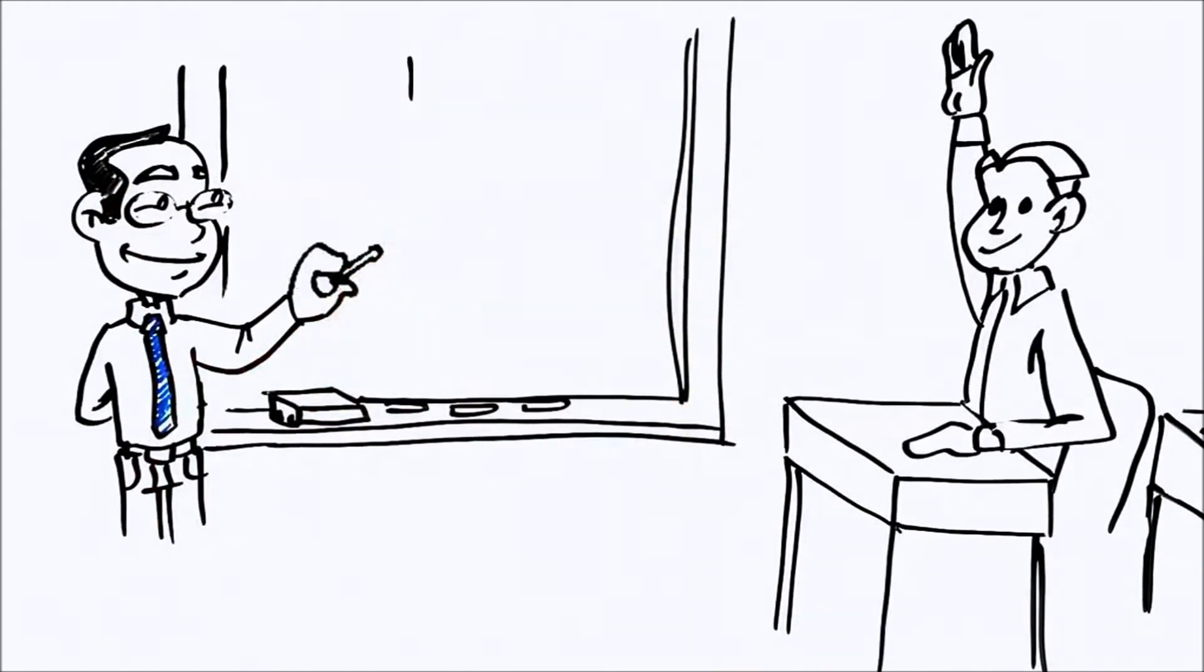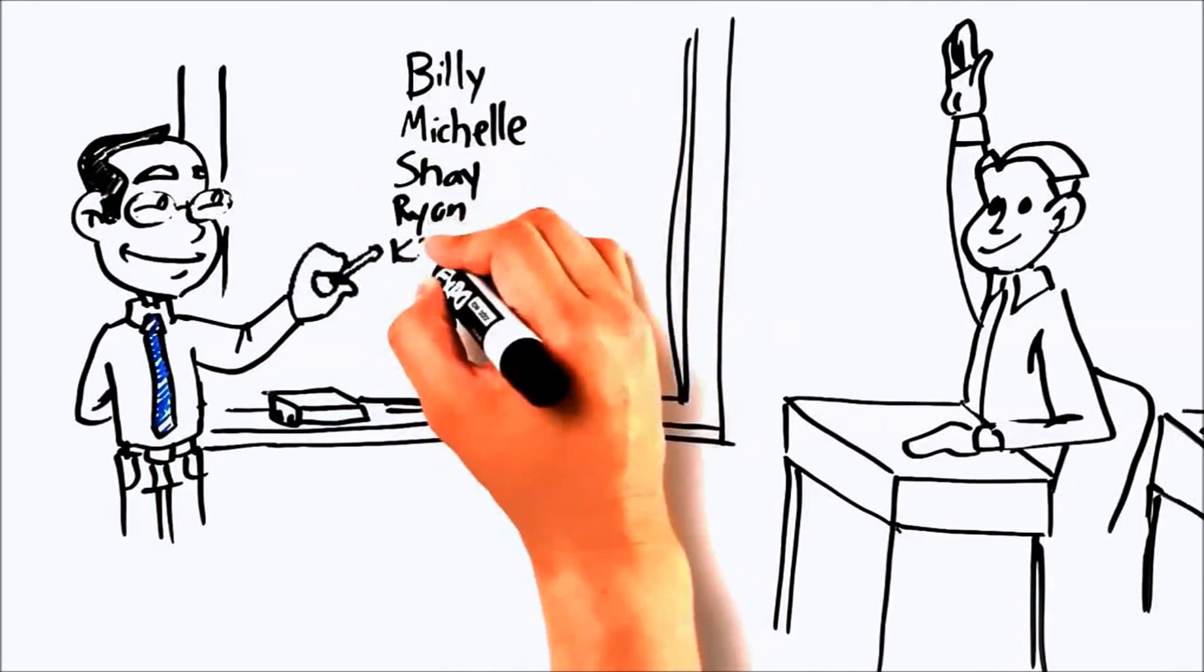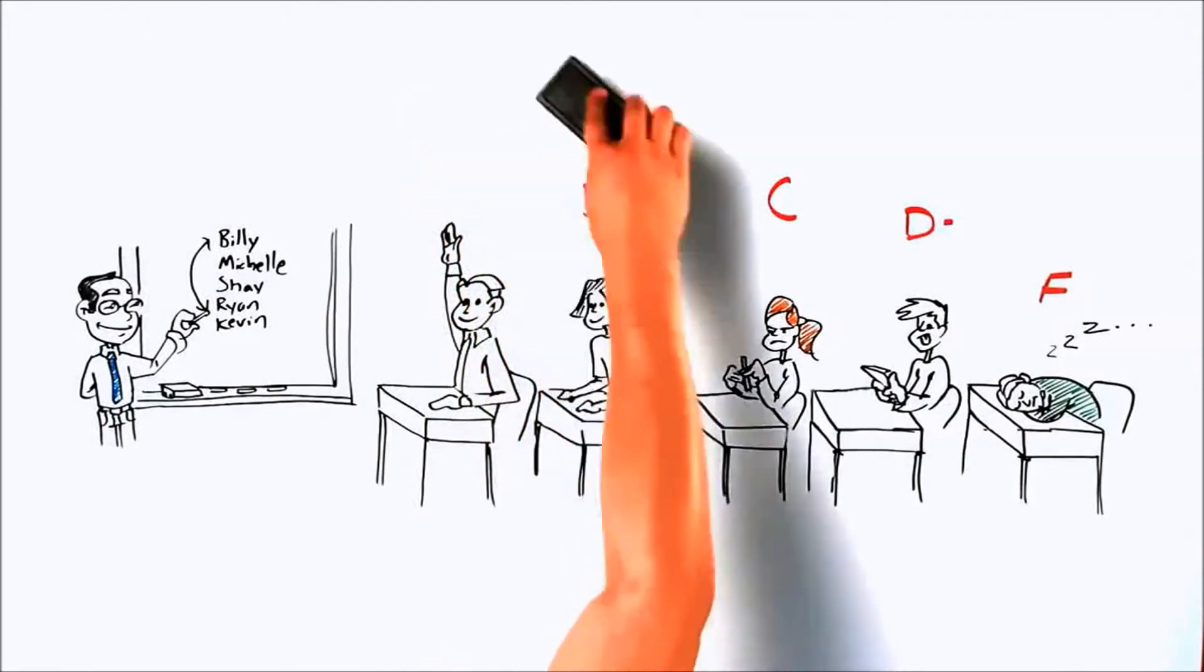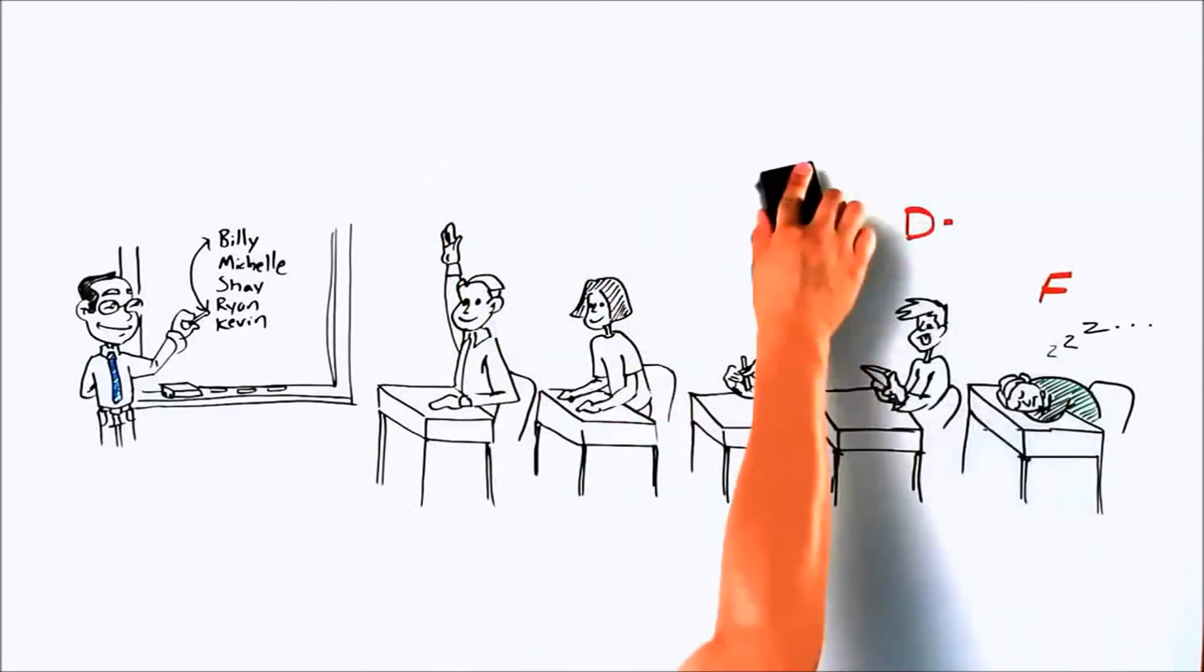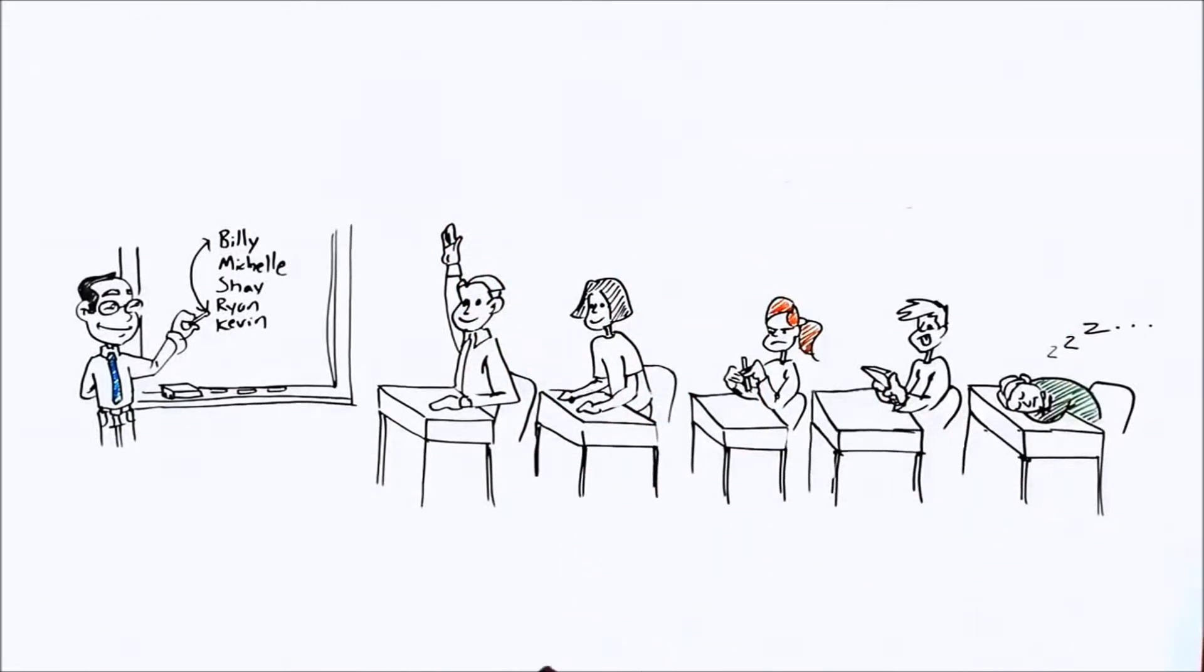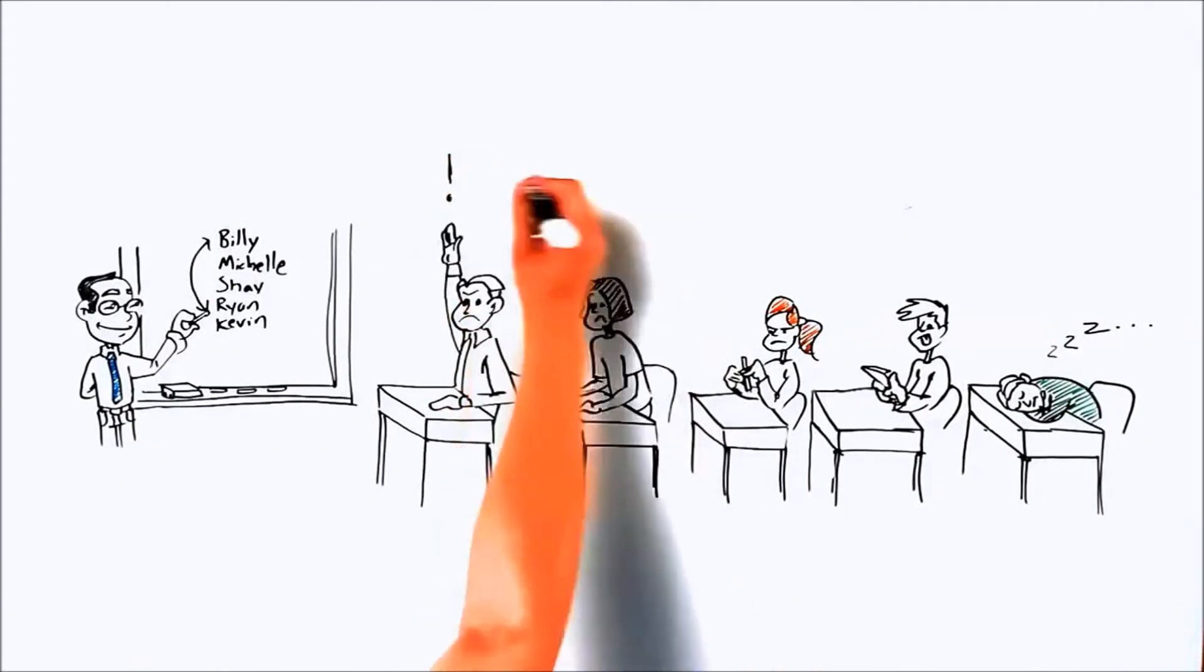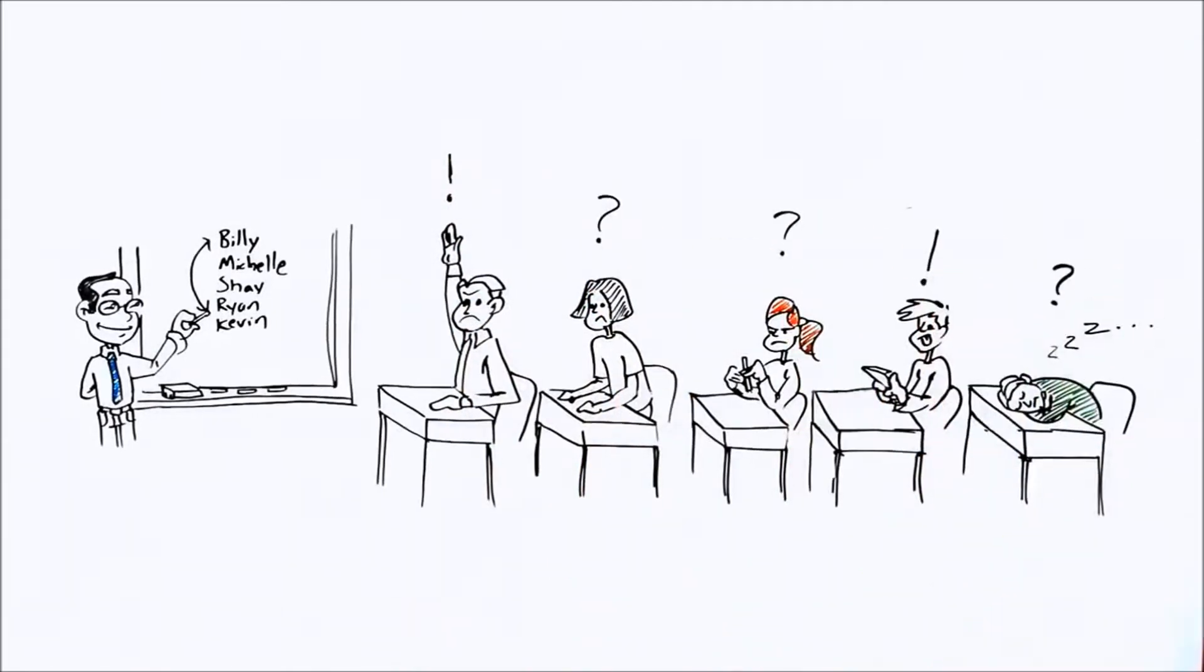I suggested that we take a quarter of the points earned by the top half of the class and pass them over to the lower half. Now everybody in the class thought that that was an idiotic idea, even the students at the bottom. And they understood my broader point. Beyond providing for essential services and a minimum basic safety net, redistributing income just to get more equality isn't fair. It's completely unfair.